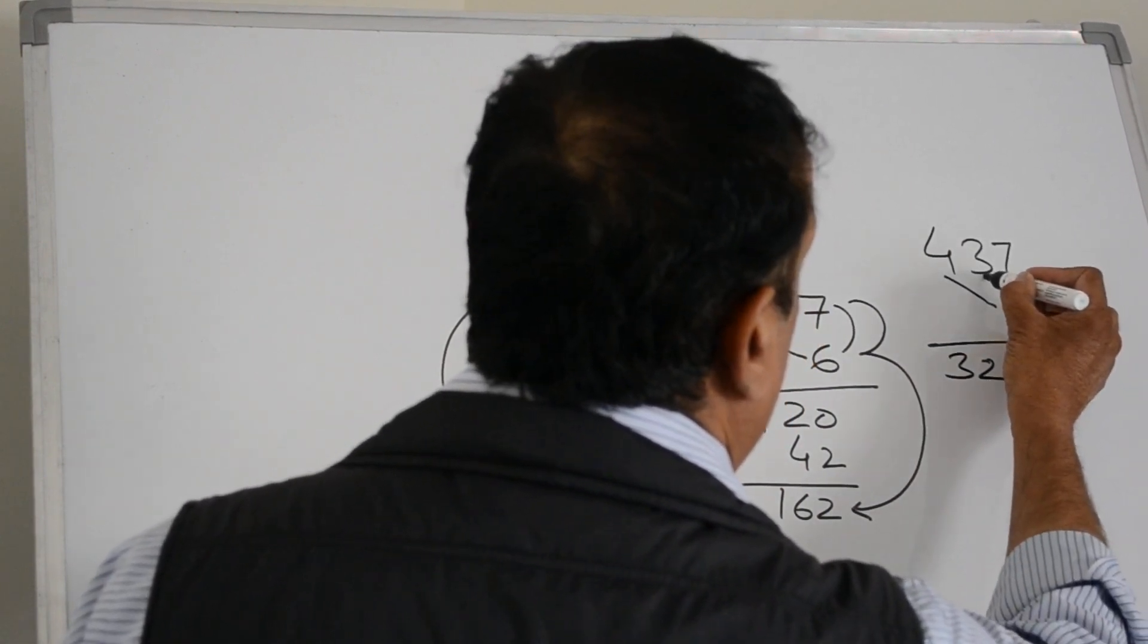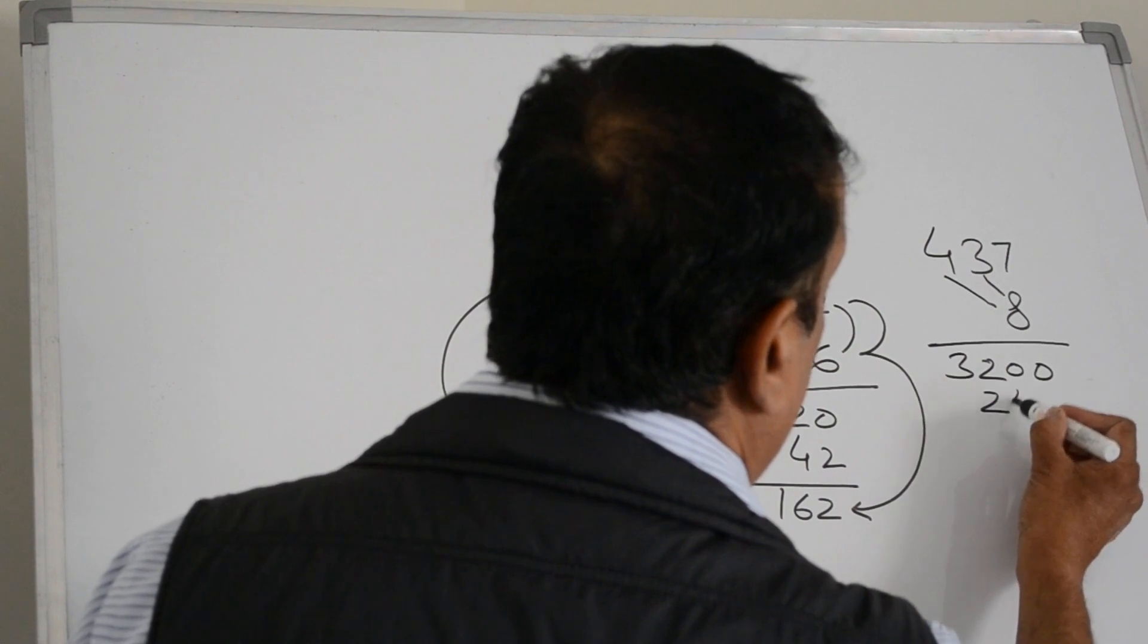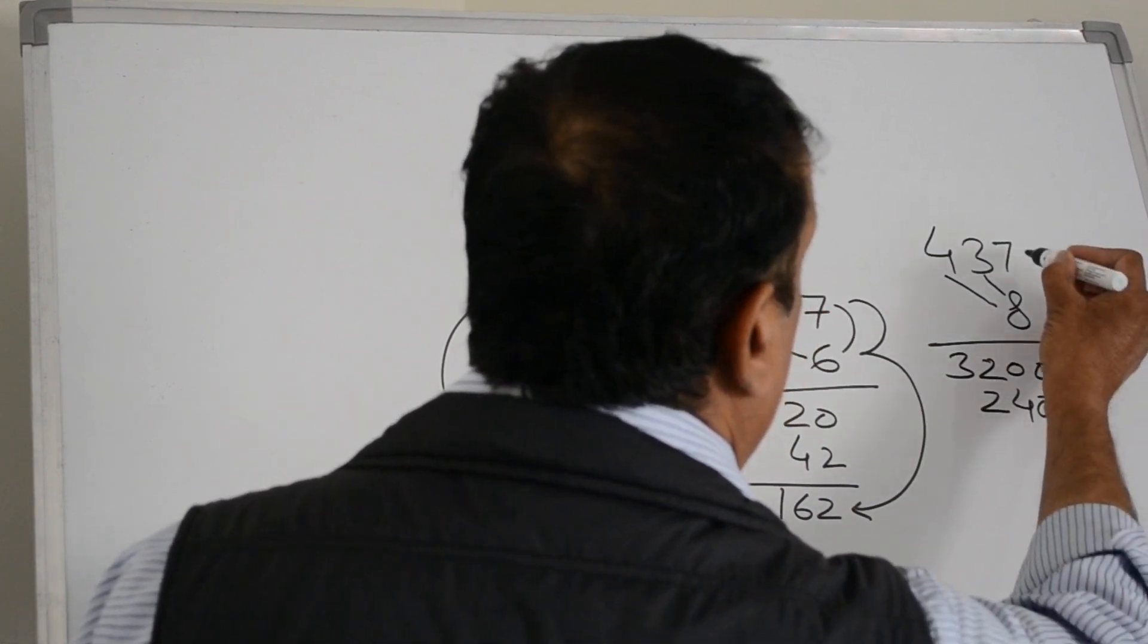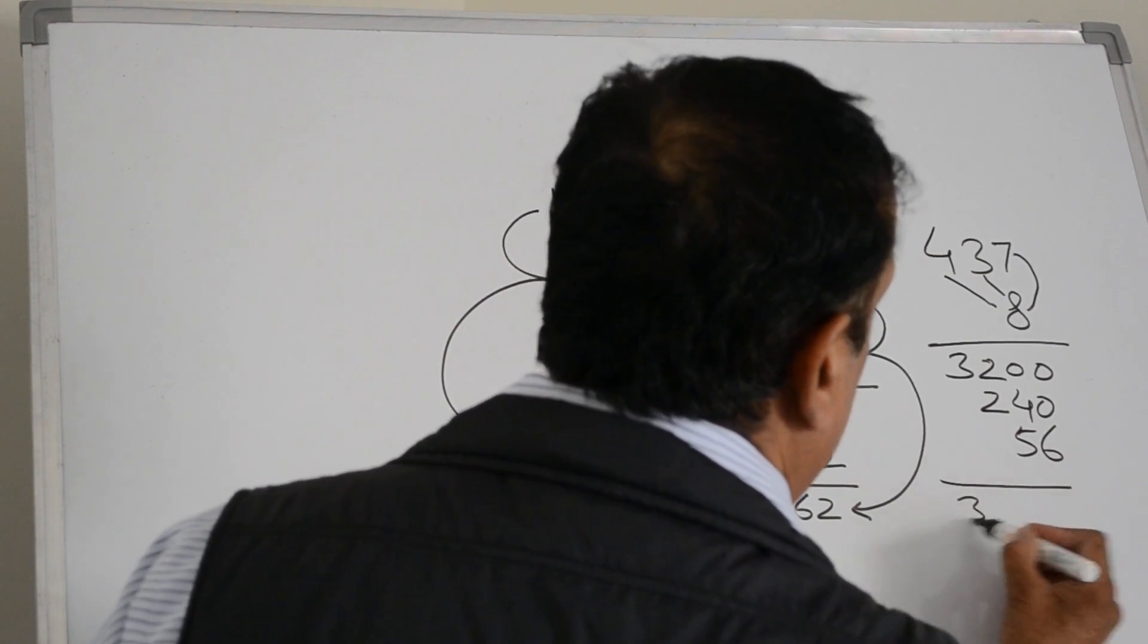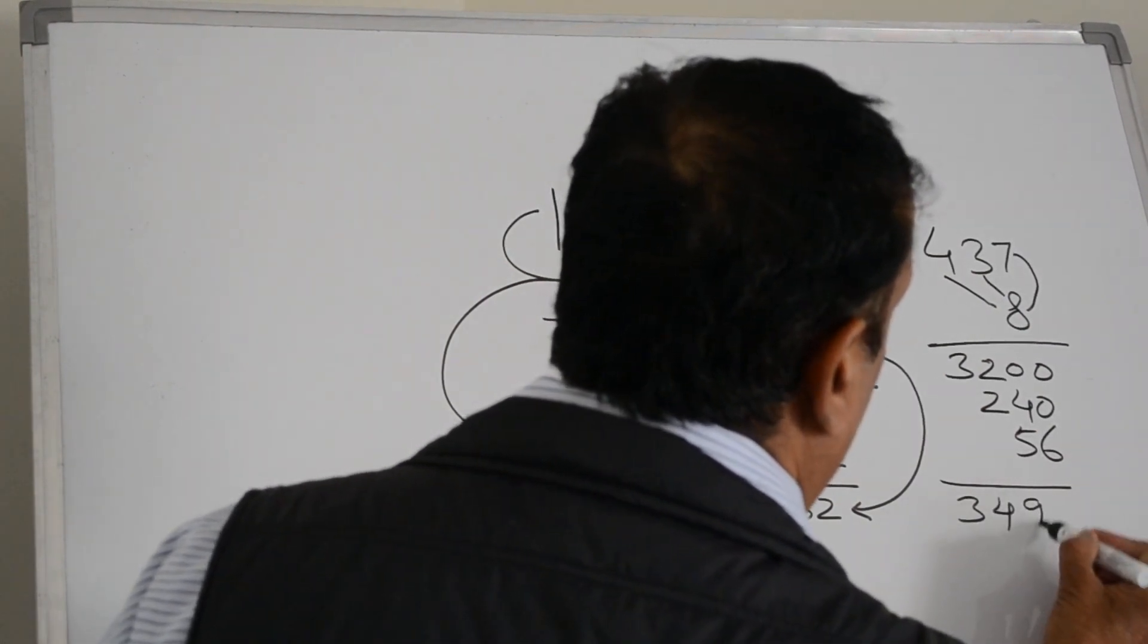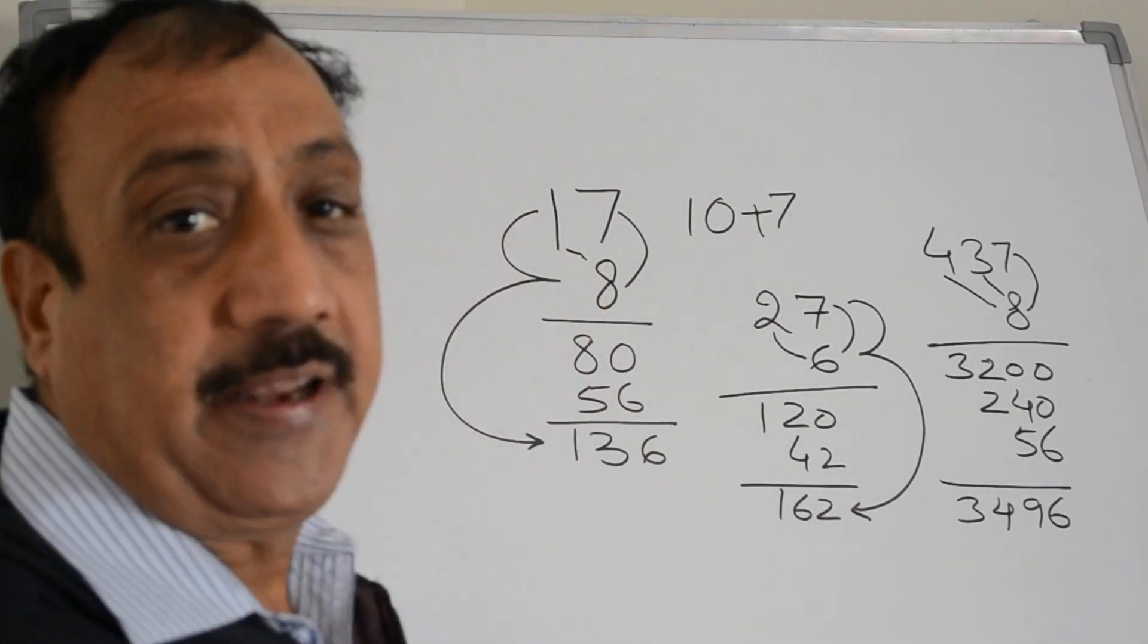Multiply 30 by 8 getting 240 and multiply 7 by 8 getting 56 and the answer comes out to be 3496.